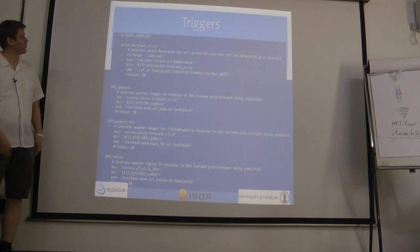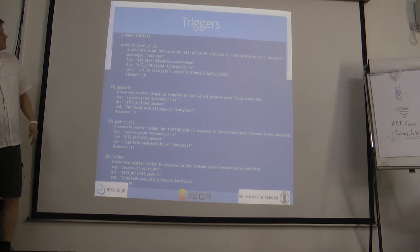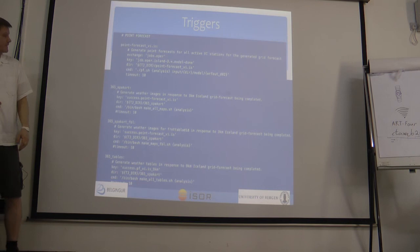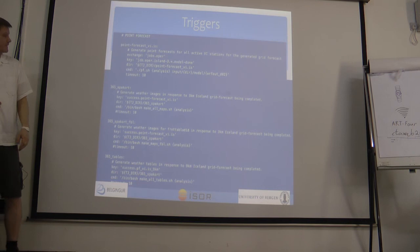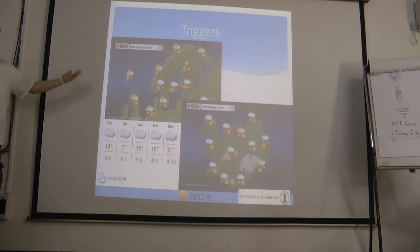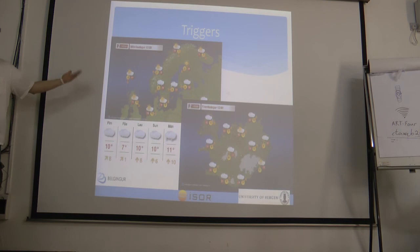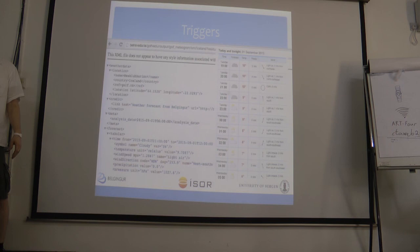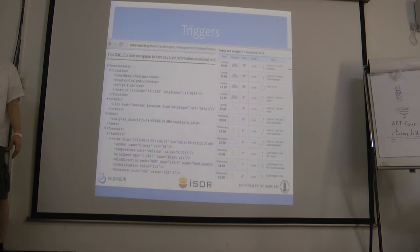Here are more examples of triggers, including one doing point forecasts where the analysis and input are fed into a script called pf.sh. This shows how you can work with the trigger. One example of outputs is a Highcharts code accessing XML forecasts in the XML format we adapted.